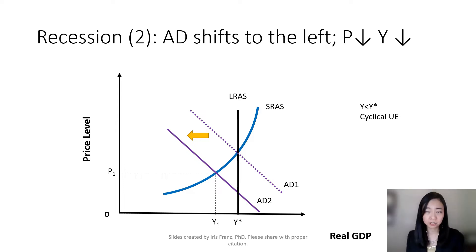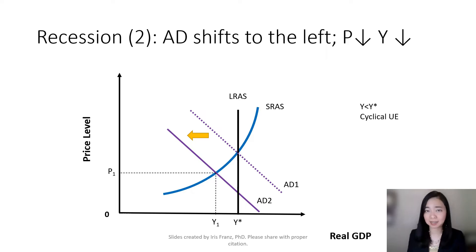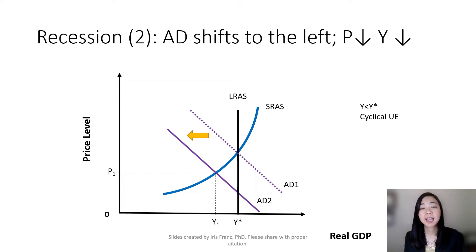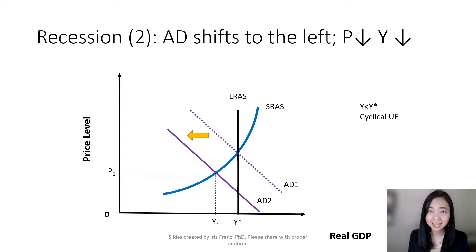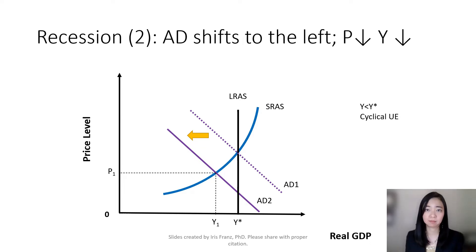Now suppose there is a recession. As a result, consumption goes down and investment goes down, so that will shift your aggregate demand curve to the left. Consequently, price level goes down and also the output goes down. Your new output level Y1 is lower than the potential output, which means we have cyclical unemployment in this economy.